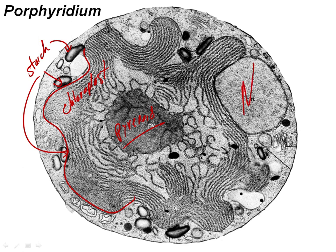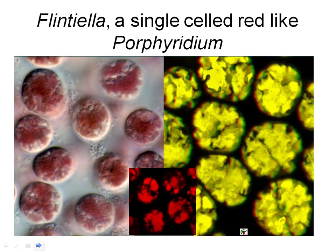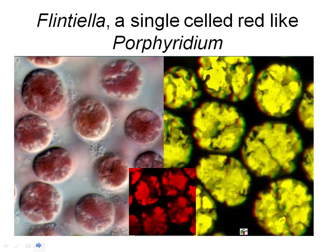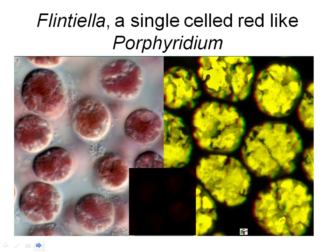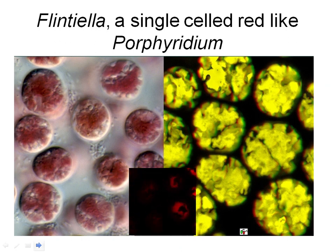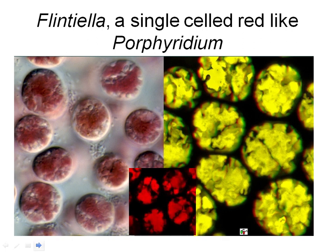Here's the nucleus. Porphyridium has been one of the most extensively studied red algae — it's a model organism, probably because it's unicellular. Here we have three-dimensional pictures of chloroplasts from another unicellular red algae, Flintiella. The chloroplasts are very densely branched, showing a very branched nature — it's nice to look at this variation in chloroplast structure.